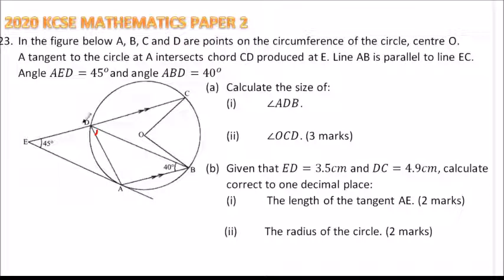So if you look at BD is a transversal. AB is parallel to DC. So we can say this transversal, these are alternate angles. So it means that angle is 40 degrees. If that angle is 40 degrees,